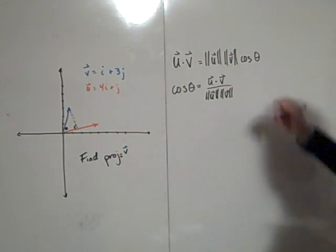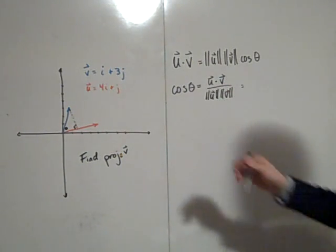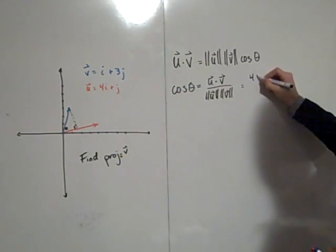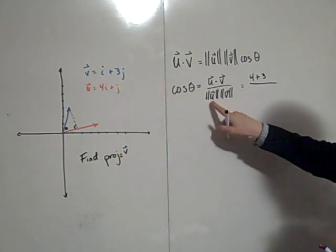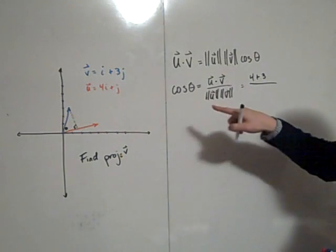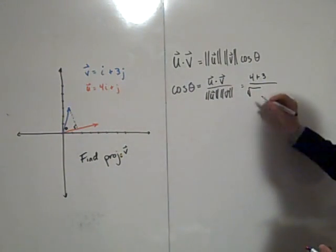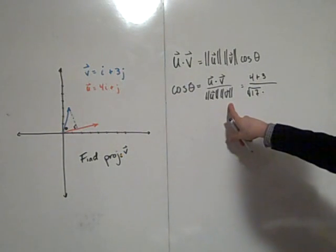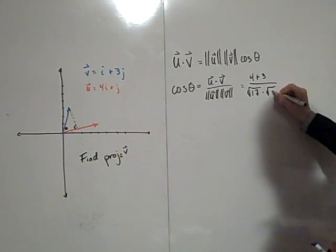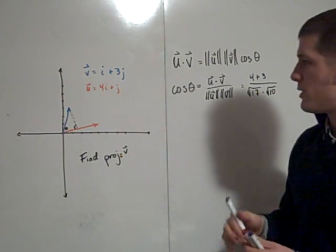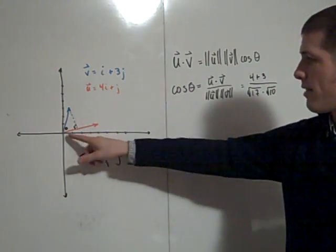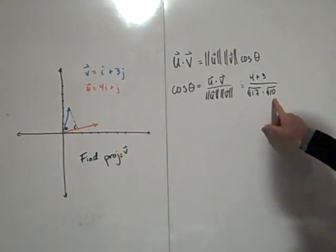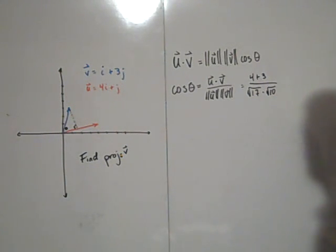The dot product u dot v is 1 times 4, which is 4, plus 3 times 1, which gives 7. The magnitude of u is the square root of 16 plus 1, which is root 17, and the magnitude of v is the square root of 1 plus 9, which is root 10. I found these using the Pythagorean theorem.